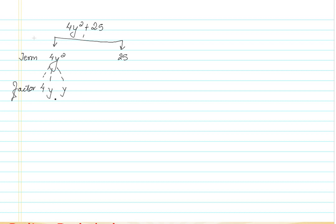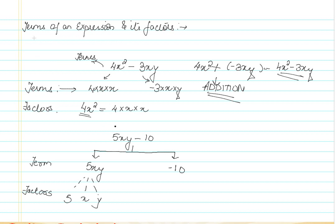There is one more terminology to be understood here. This numeric constant present in the term is known as the numerical coefficient. Whenever there is a numeric constant present — for example, in the term 5xy, the number 5 is the numeric constant, so 5 becomes the numerical coefficient for the term 5xy. Similarly, in 4x squared minus 3xy, the terms are 4x squared and minus 3xy, and here 4 and minus 3 become the numerical coefficients.